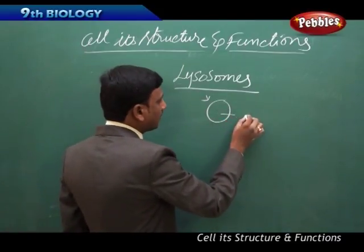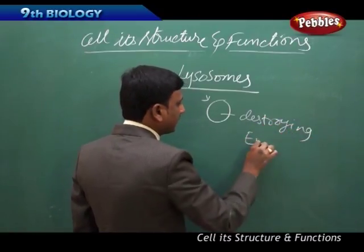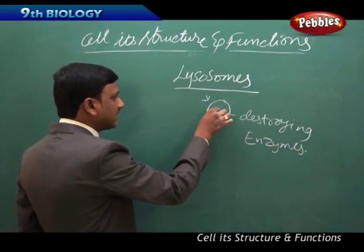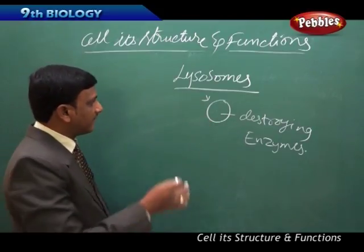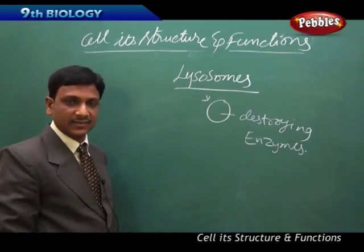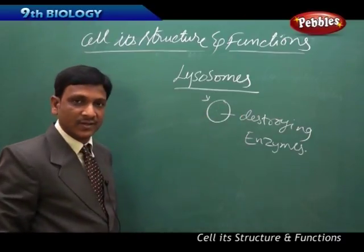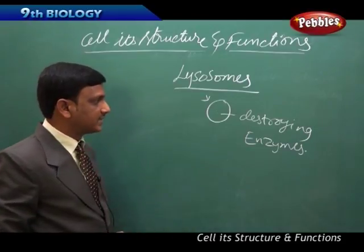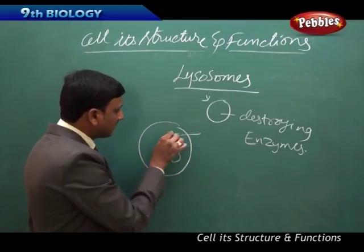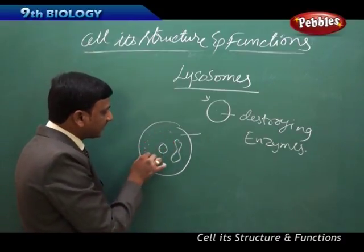The lysosomes consist of destroying enzymes. These destroying enzymes are there inside the lysosome. Earlier, when scientists did not know about these lysosomes, they identified some destroying enzymes inside a cell. They did not know that these destroying enzymes are carried by lysosomes. So they thought it was a mystery how a cell is able to withstand these destroying enzymes without collapsing, without getting destroyed.